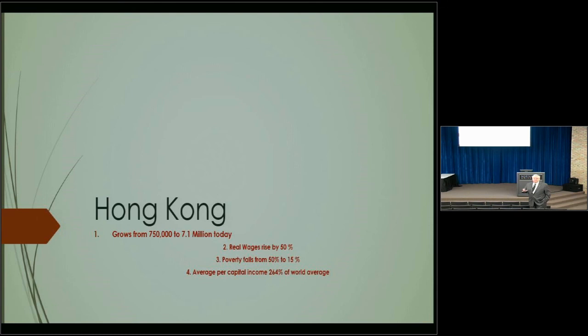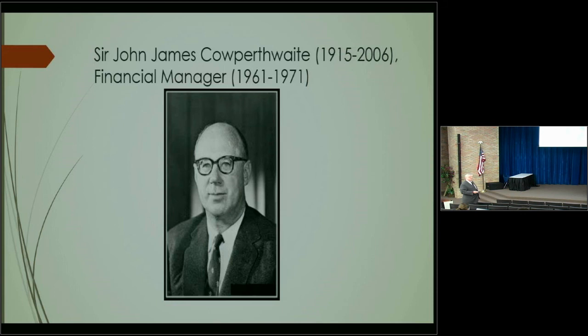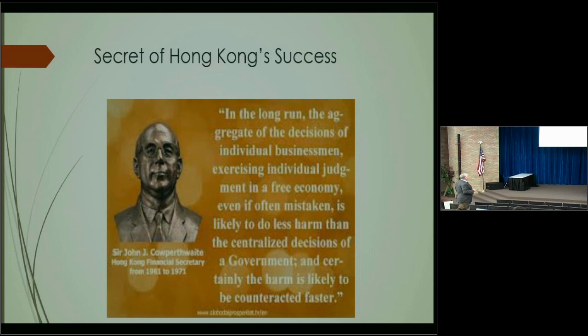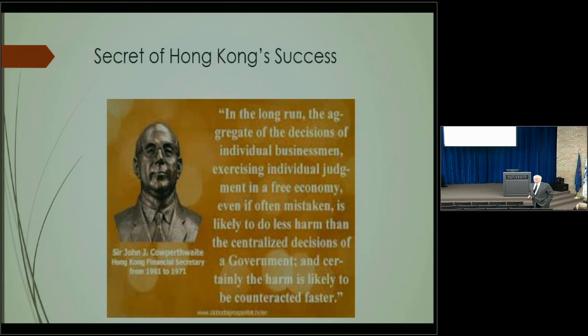The administrator who did this was Sir John James Cowperthwaite. His program was to allow the free markets and personal initiative to operate. He said: 'In the long run, the aggregate decisions of individual businessmen exercising individual judgment in a free economy, even if mistaken, are likely to do less harm than the centralized decisions of government.' He didn't even allow economists to take statistics on Hong Kong — because if they took statistics, they'd want to control things.